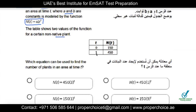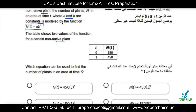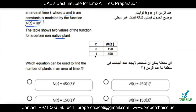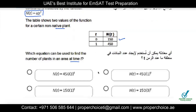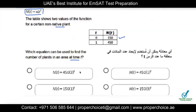The table shows that when t equals zero, N(t) equals 150 — meaning at the beginning there were 150 non-native plants. At t equals one, there are 450 plants — perhaps after one hour, day, or month, whatever the time units are. The question asks which equation can be used to find the number of plants at time t. This is simply a substitution-type question.